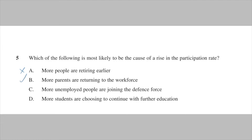But just to make sure, let's play out the other scenarios — it's a good habit to look at all the options even when you think you're right. Option C: more unemployed people are joining the defense force. They're shifting from unemployed to employed, which would make no difference to the participation rate, because both employed and unemployed are counted anyway — C is wrong. Option D: more students are choosing to continue with further education. We could assume that this means they're less likely to be working or looking for a job, so the labor force would either see no growth or even shrink. This confirms that our answer is B.